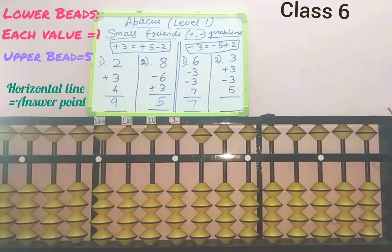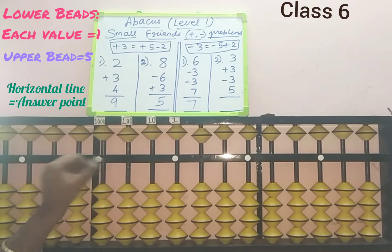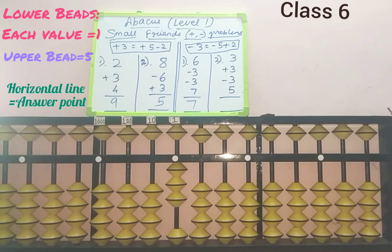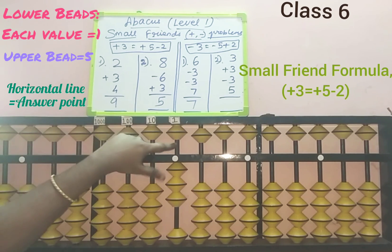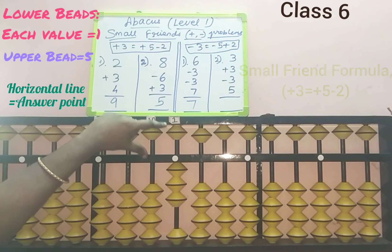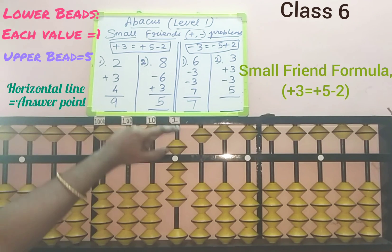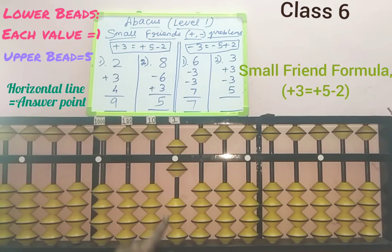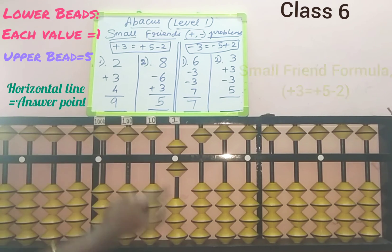Next, the second sum in the subtraction part: 3 plus 3 minus 3 plus 5. From the first row, add 3 in the ones slot from the lower part: 1, 2, 3 — 3 is added. From the second row, add 3 again. Only 1 bead is available, so we cannot add 3 directly. Use the formula for adding 3 — 3 is less than 5, so check the small friend formula. The question has a plus symbol, and 5 beads are available, so plus 5. Three's friend is 2; remove the friend: 1, 2. Plus 5 minus 2 is the small friend formula for plus 3 — 3 is added.